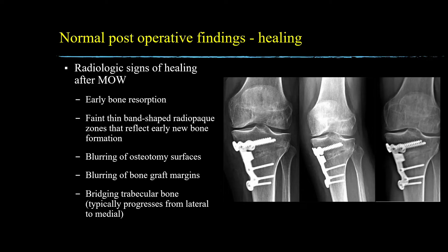Radiographic signs of healing after medial opening wedge HTO include early bone resorption, faint thin radiopaque bands that reflect early bone formation, blurring of the osteotomy and bone graft margins, and finally bridging trabecular bone. These images demonstrate sequential frontal knee radiographs showing a post-operative MOW-HTO using a locking plate and screw fixation at two weeks on the image on your left, six weeks in the middle, and 12 months on your right, showing radiographic signs of progressive healing.